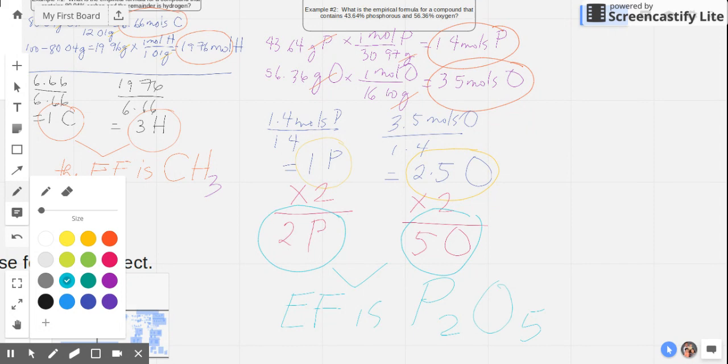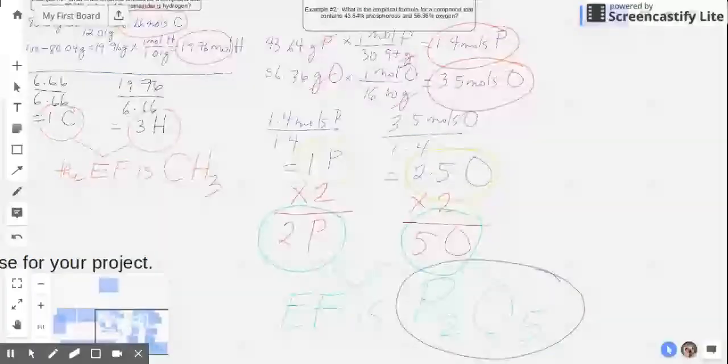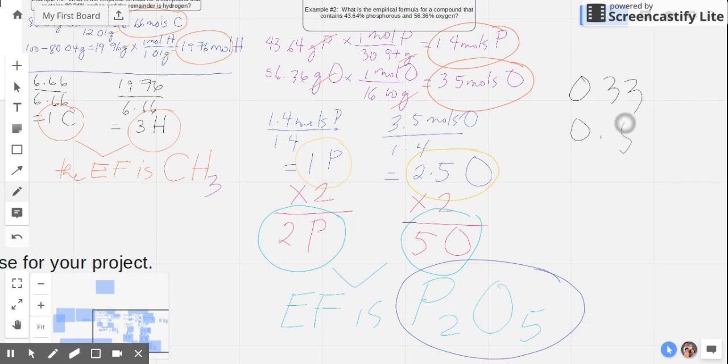P2O5 is named as diphosphorus pentoxide. So what are the cases wherein the numbers have to be multiplied by a certain multiplier so that they become whole numbers? These are the numbers that you need to watch out for: 0.33, 0.5, 0.25, and 0.75.